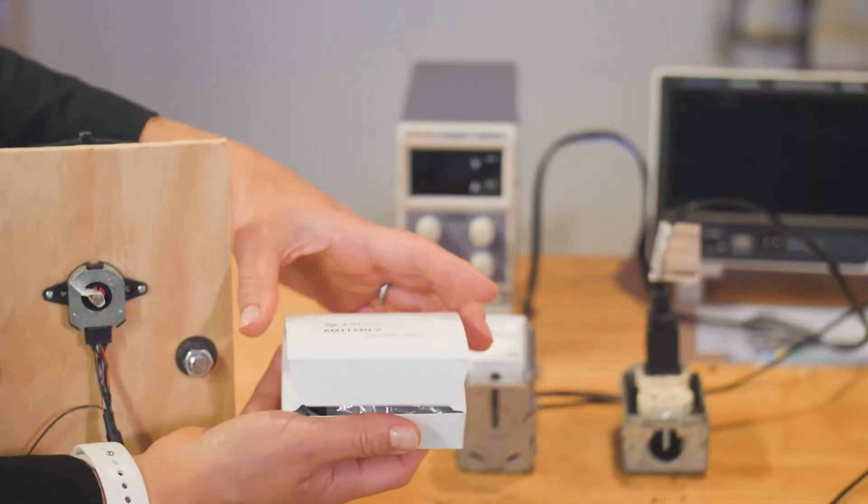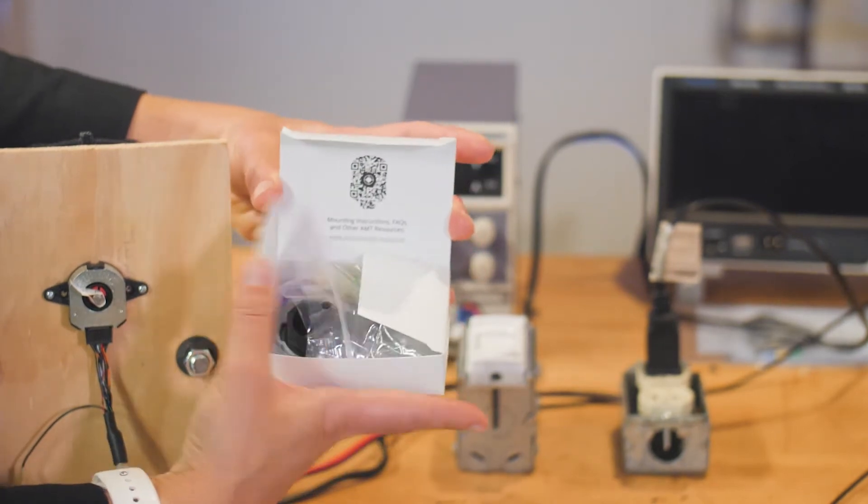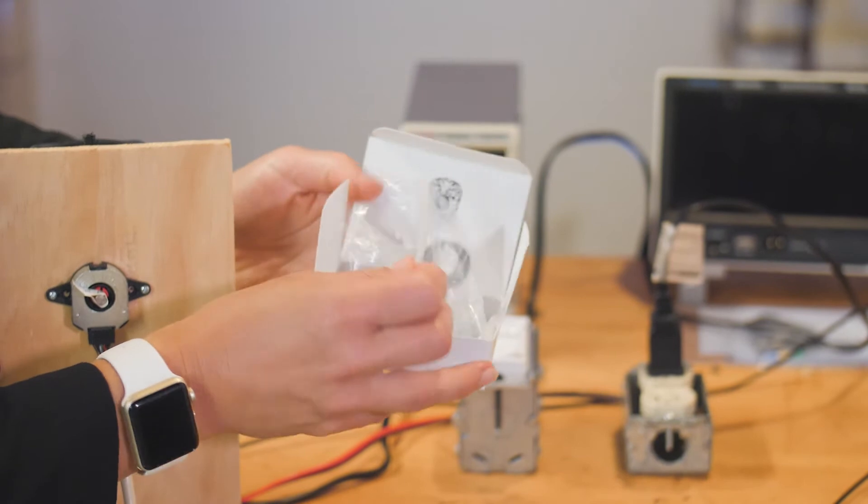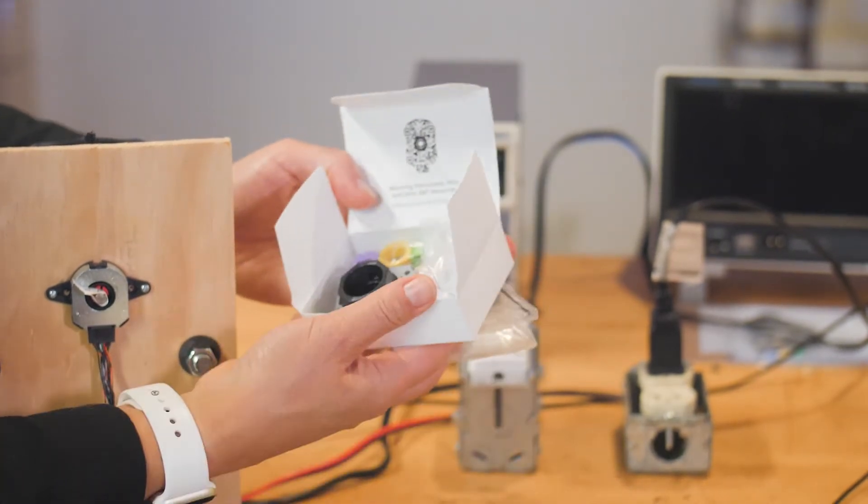The AMT 11 series supports shaft sizes from 2mm to 8mm, while the AMT 13 series supports 9mm to 5/8 inch motor shafts. These encoders come in the form of kits that you assemble on the motor shaft. Each kit comes in a little white box, and when you open it you see the two parts of the encoder and several adapters.